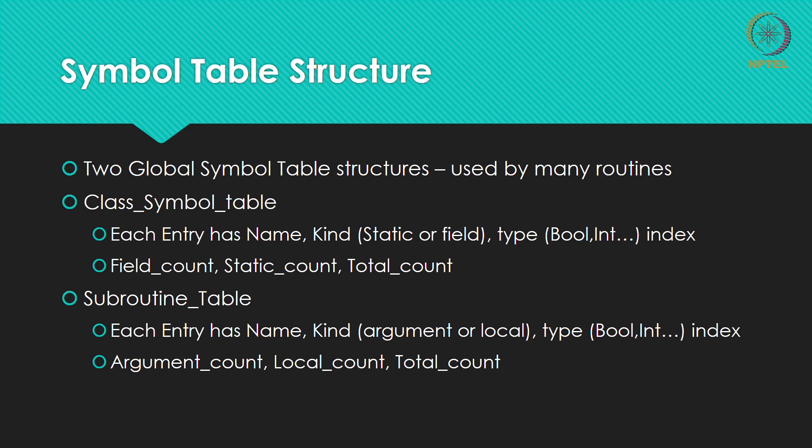In addition to these entries, there will be three other integers associated with the class symbol table: field count, which tells you the number of field variables; static count, which tells you the number of static variables; and total count, which is field count plus static count.